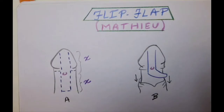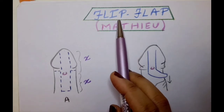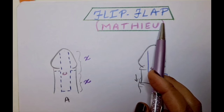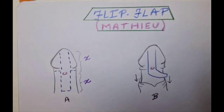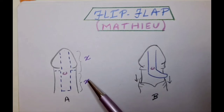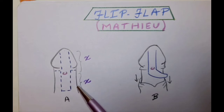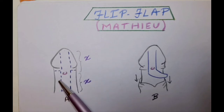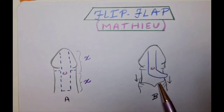We will now continue with the technique known as flip-flap, originally described by Matthew. This is a single-stage procedure used for cases of distal shaft to mid-shaft hypospadias. In this technique, it is important that there should be good ventral skin because that is where the flap will be raised from. Whether degloving is required in the entirety of the shaft or just enough to release the chordee is debatable.